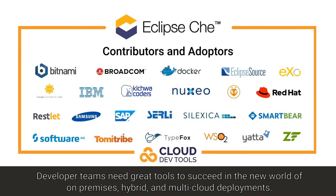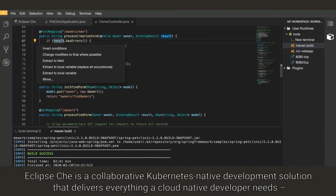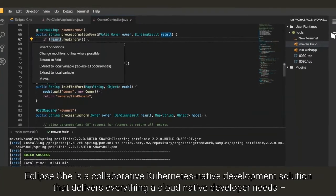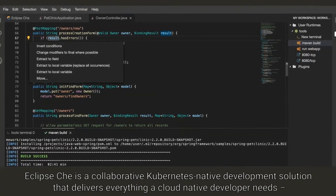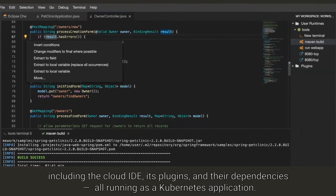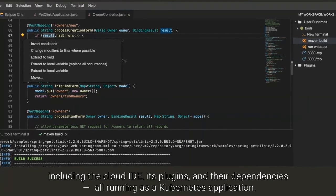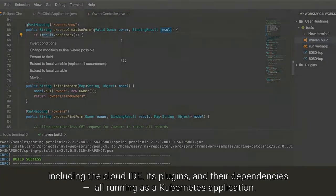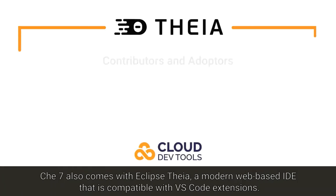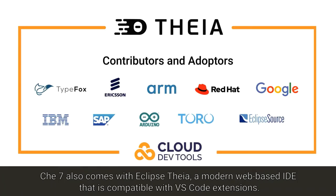Developer teams need great tools to succeed in the new world of on-premises, hybrid, and multi-cloud deployments. Eclipse Che is a collaborative Kubernetes-native development solution that delivers everything a cloud developer needs, including the IDE, its plugins, and their dependencies, all running as a Kubernetes application. Che7 also comes with Eclipse Theia, a modern web-based IDE that is compatible with VS Code extensions.